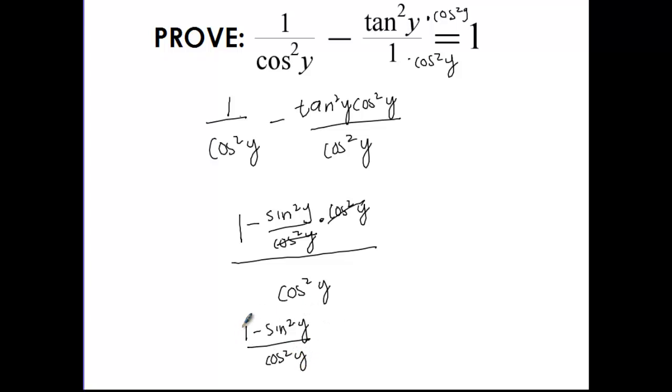Right here, this is a Pythagorean identity. So we know that cosine squared plus sine squared is equal to 1. So if we move the sine squared over, 1 minus sine squared y is equal to cosine squared y over cosine squared y. And that simplifies to 1.